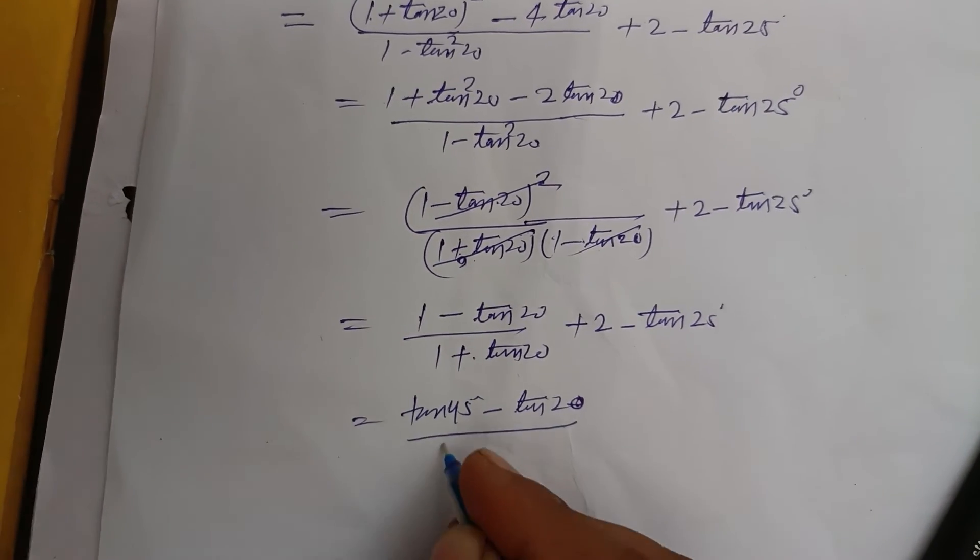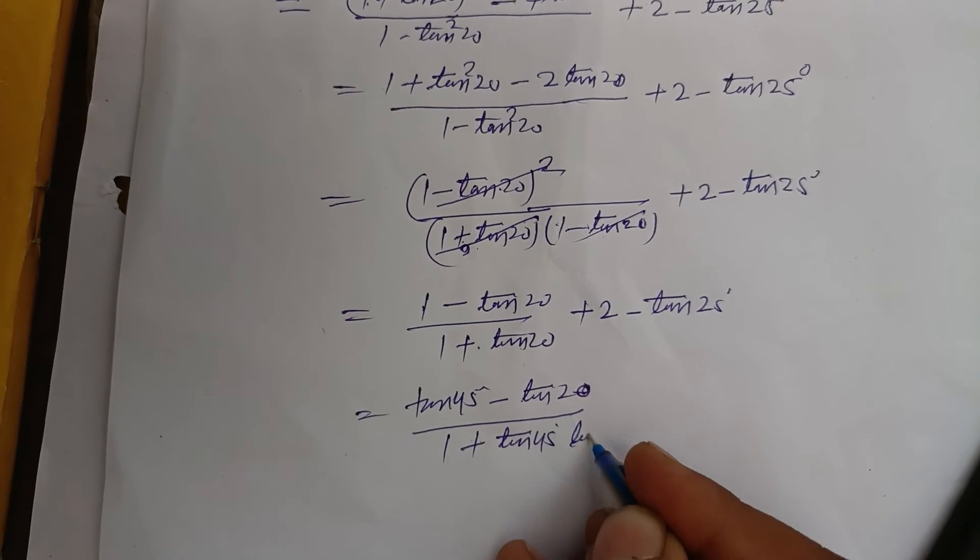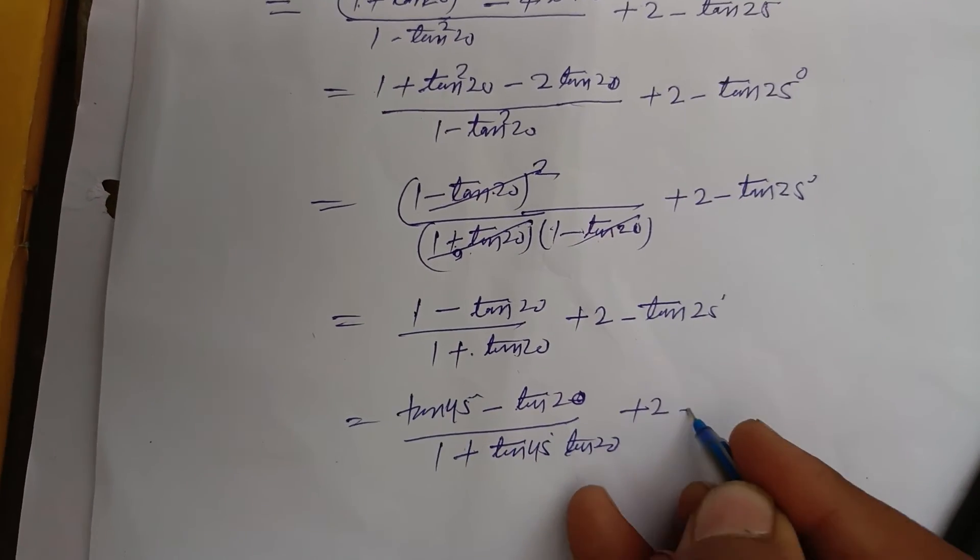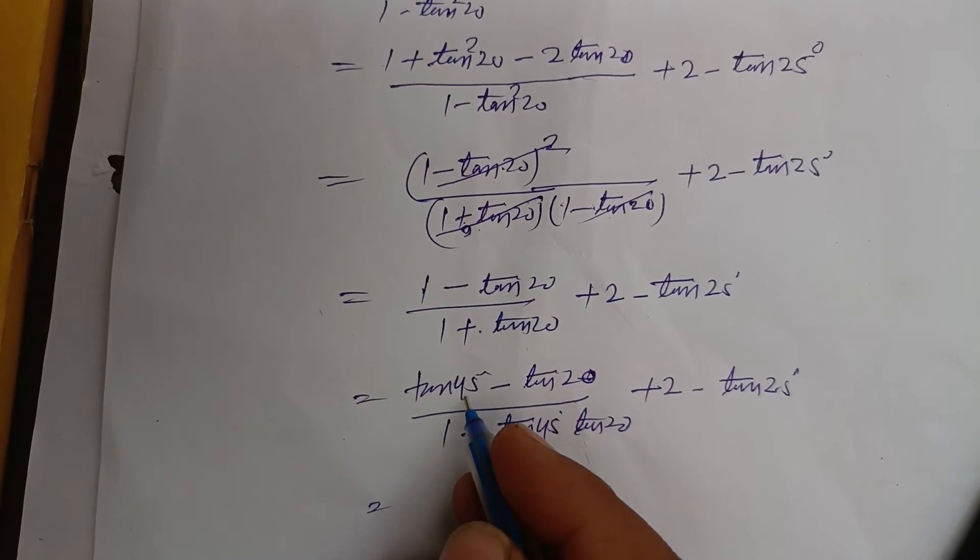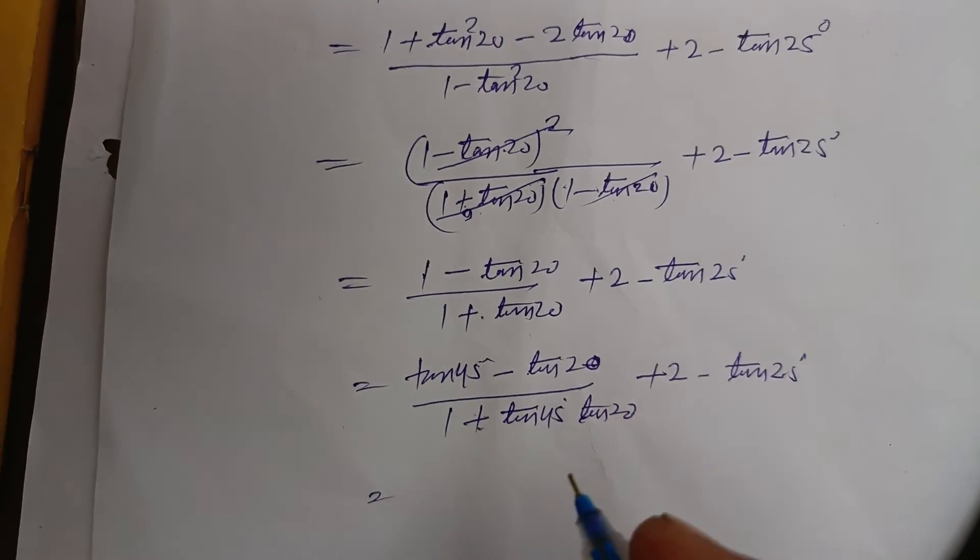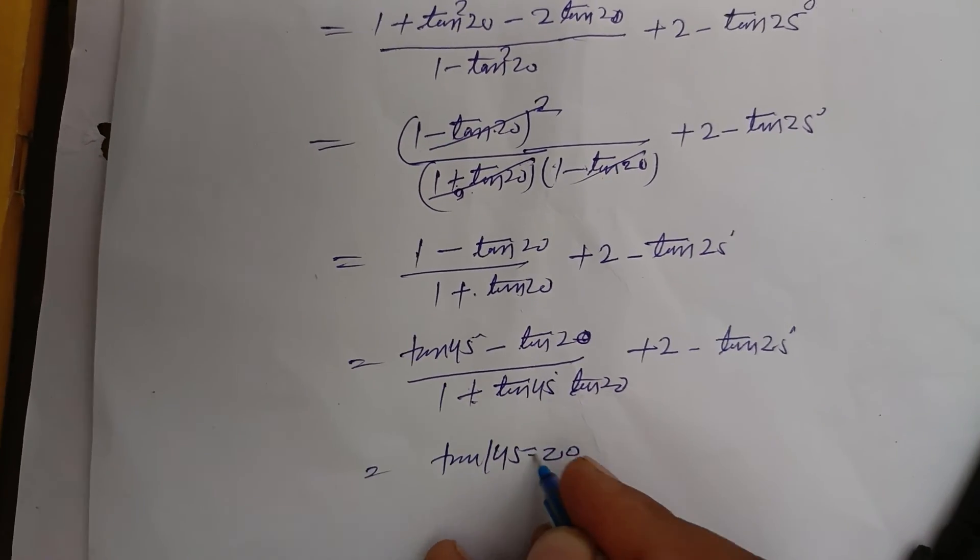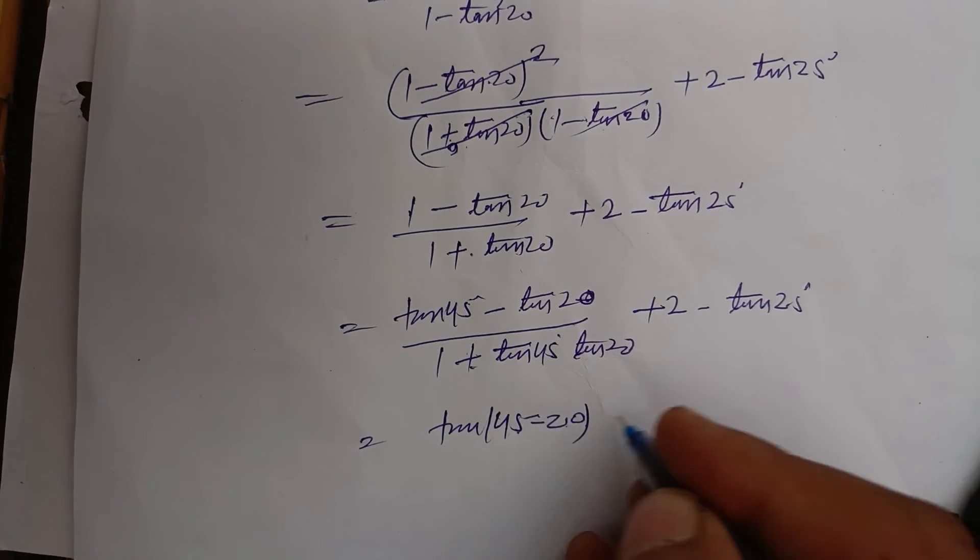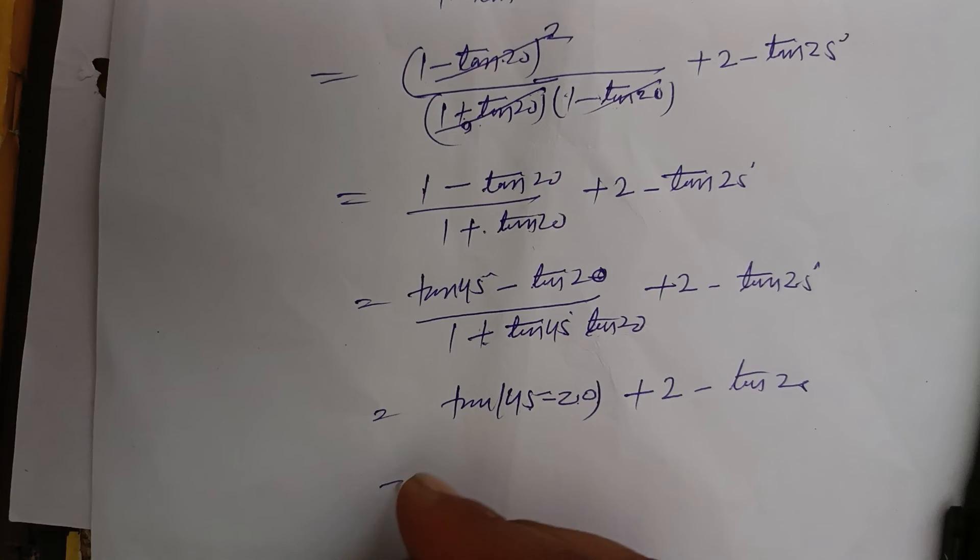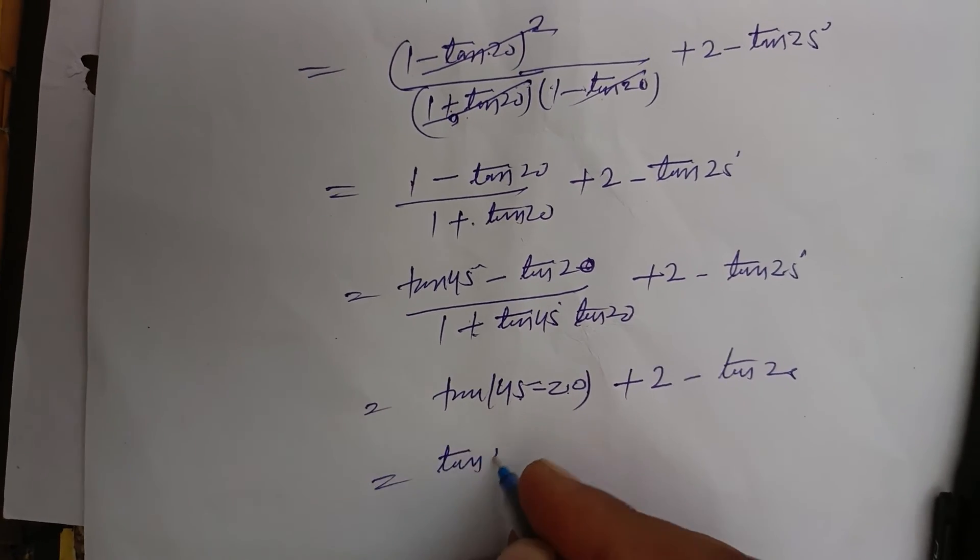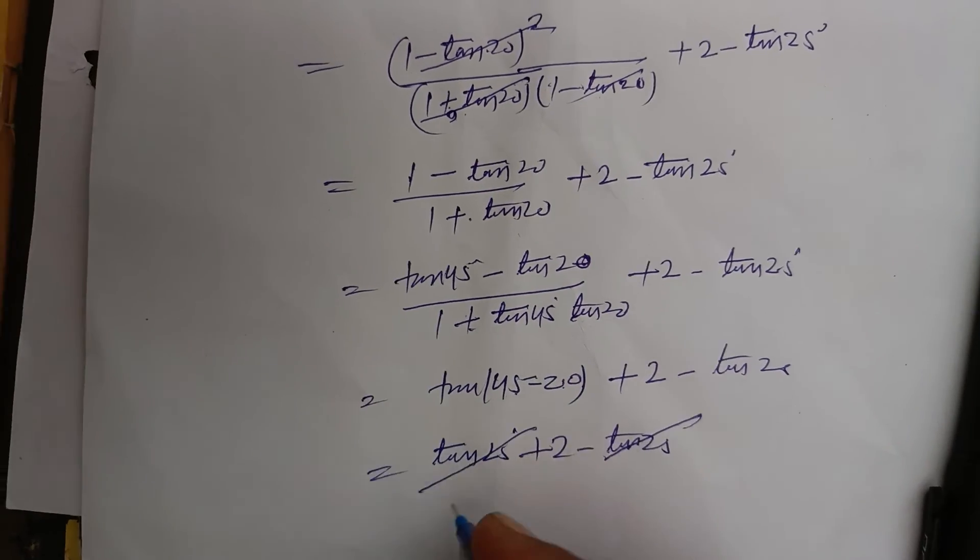tan45° - tan25° over 1 + tan45° times tan20°, plus 2 minus tan25°. This becomes tan(a - b), which is tan(45° - 25°) = tan20°, plus 2 minus tan25°.